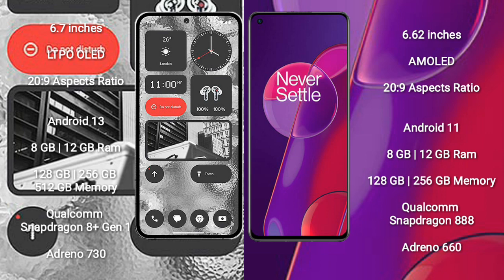Nothing Phone 2 comes with 8GB and 12GB RAM, and 128GB, 256GB, 512GB internal storage, with a Qualcomm Snapdragon 8 Gen 1 processor and GPU Adreno 730.